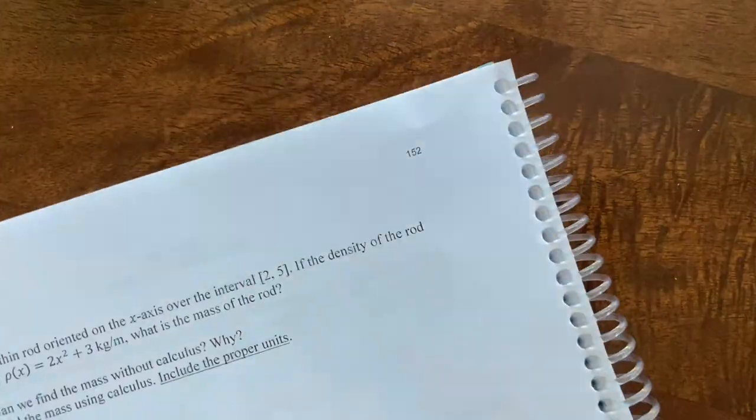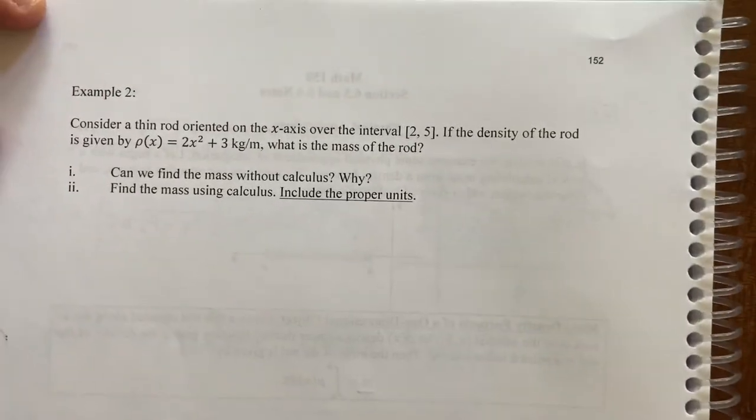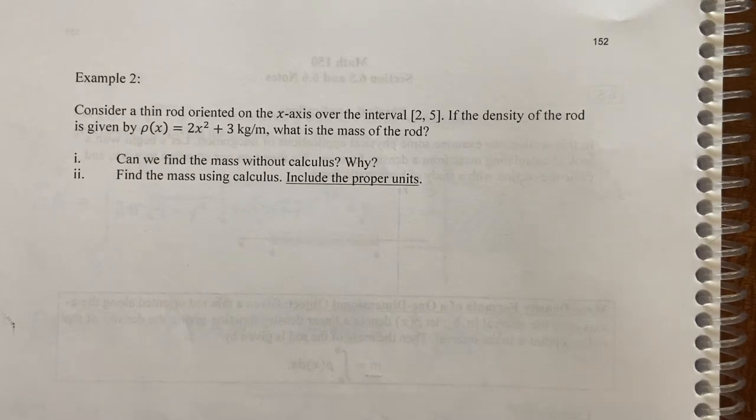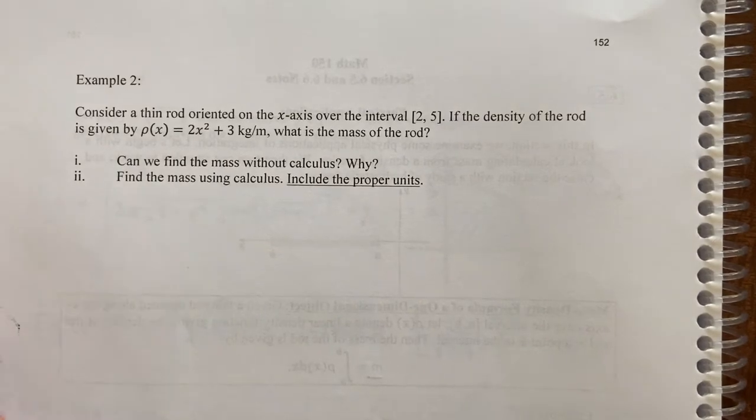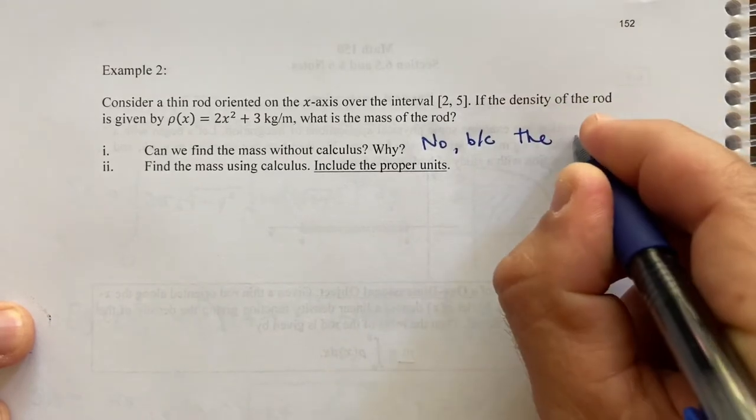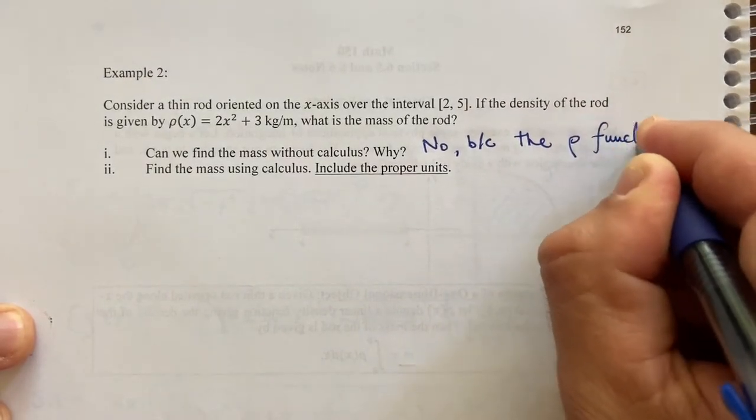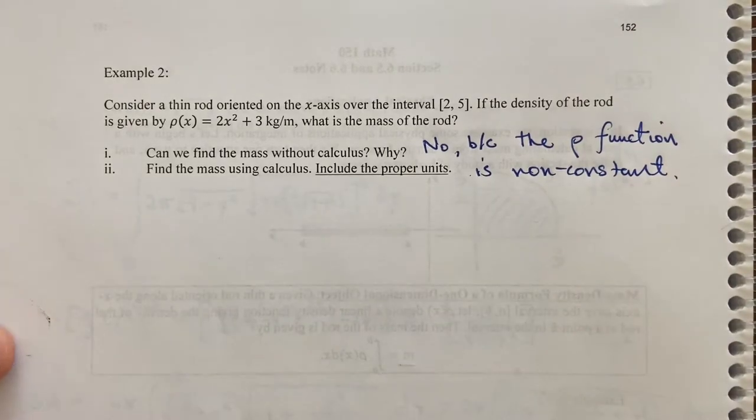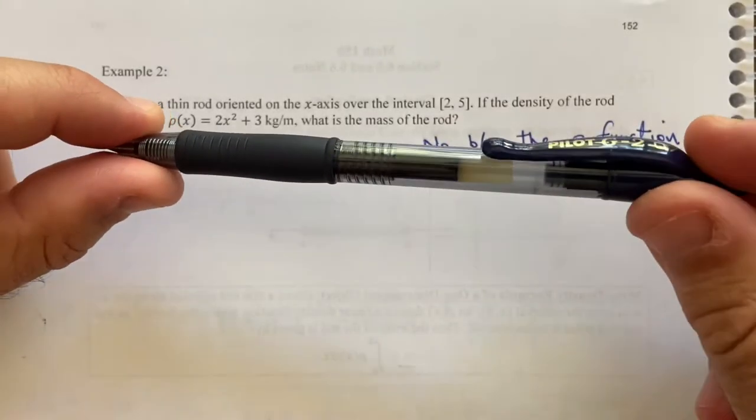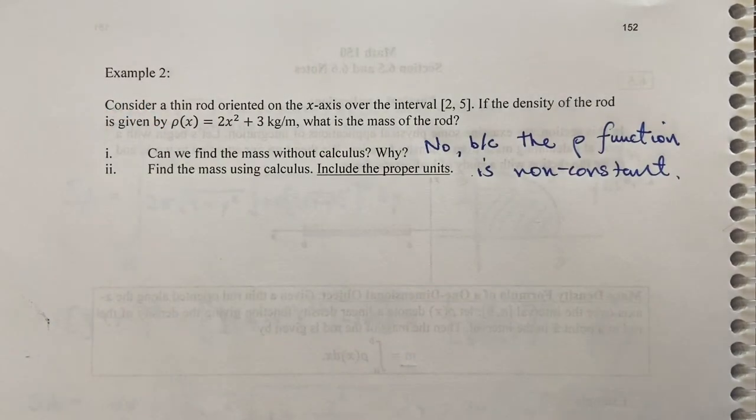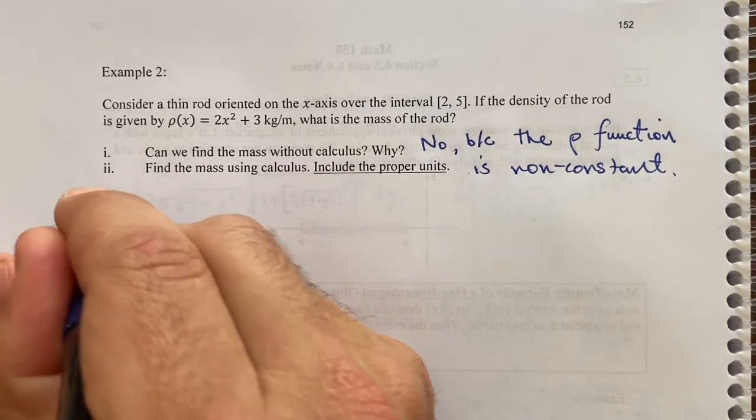Let's see another one. So on page 152, we have this one. It says, consider a thin rod oriented on the x-axis over the interval two to five. If the density of the rod is given by this quadratic, what is the mass of the rod? So can we find the mass without calculus? No. And that would be because the density function is non-constant. So similar to how I was pointing out my pen, right? If you look at this non-uniform object, it has a different density at each x location you might identify.